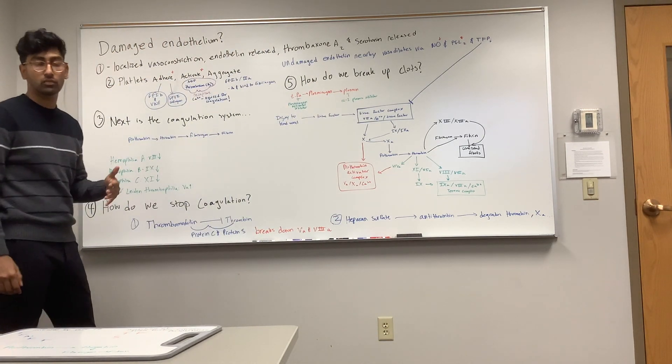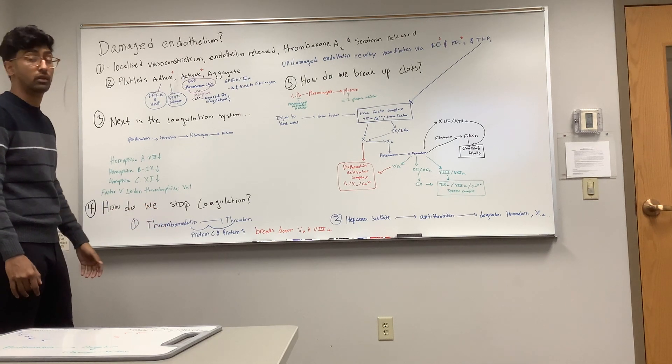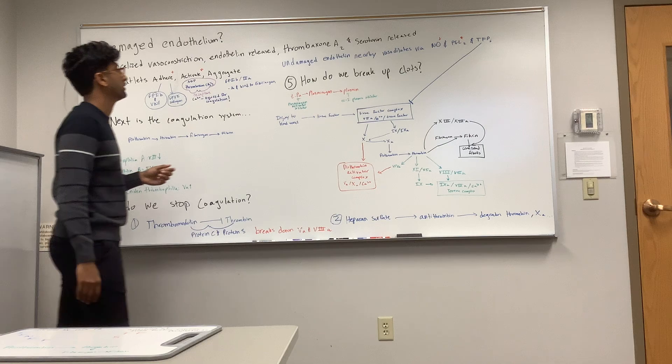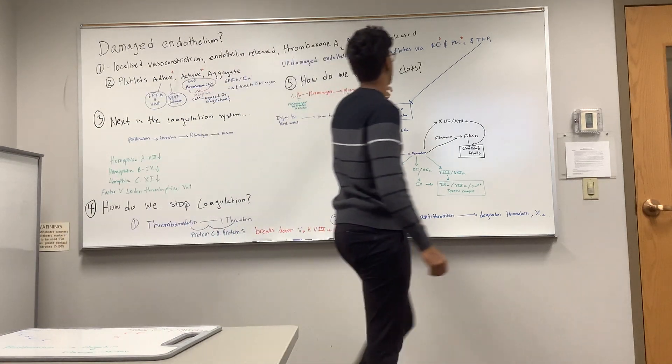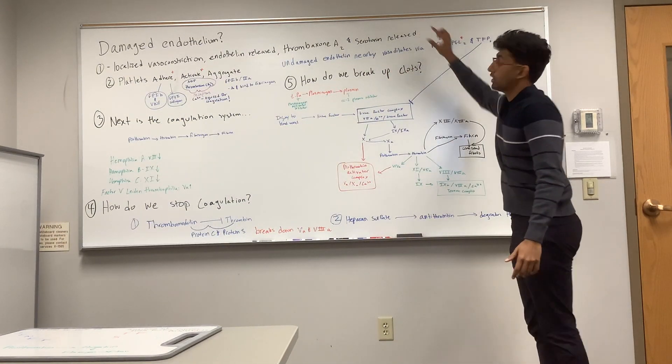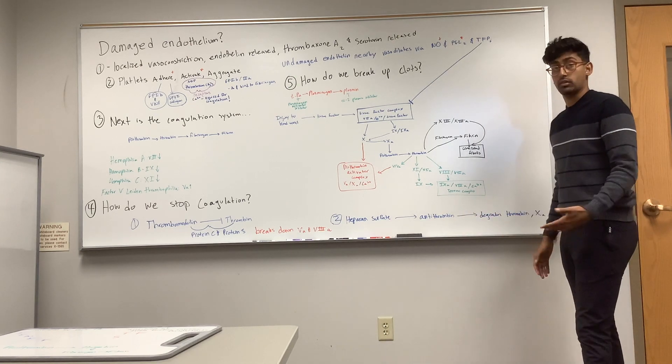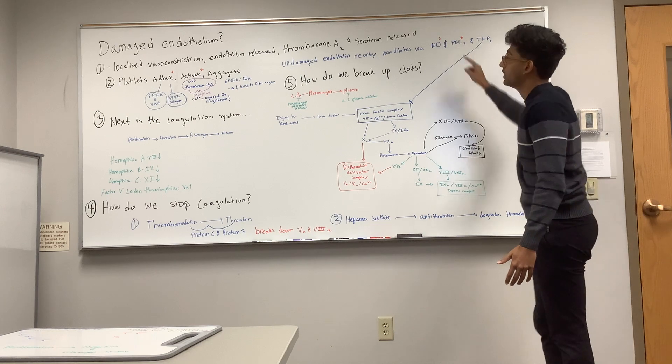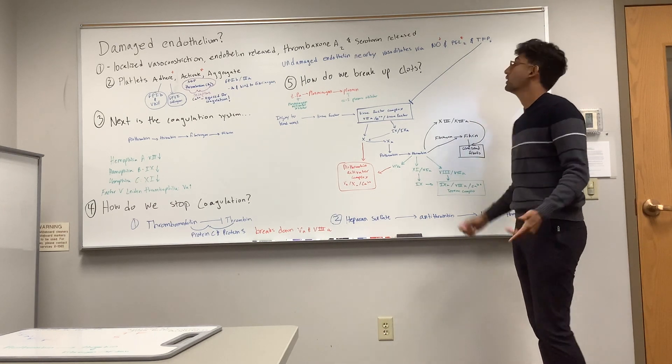What happens if we damage the endothelium, which is just a thin layer of cells in the blood vessels and in the heart? First, we have localized vasoconstriction where endothelin, thromboxane A2, and serotonin is released. The undamaged endothelium nearby is going to do the opposite—it's going to vasodilate and release nitric oxide and prostacyclin, which is going to inhibit our next step.